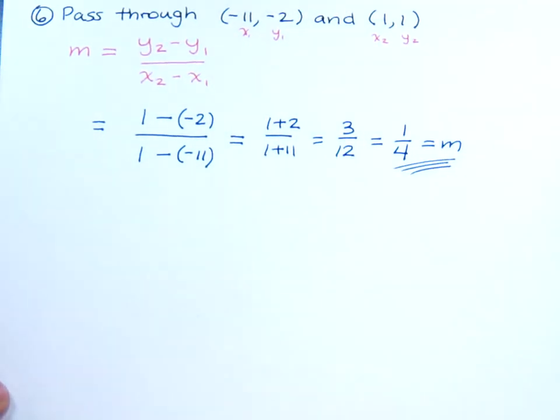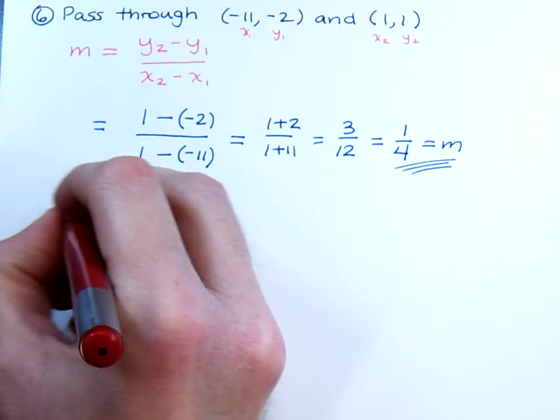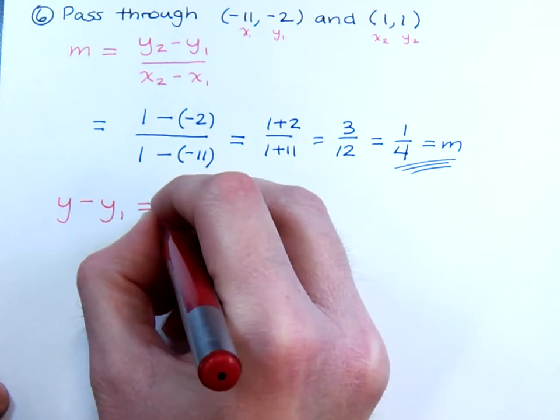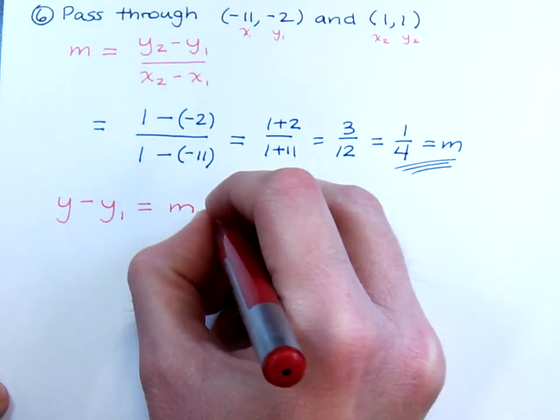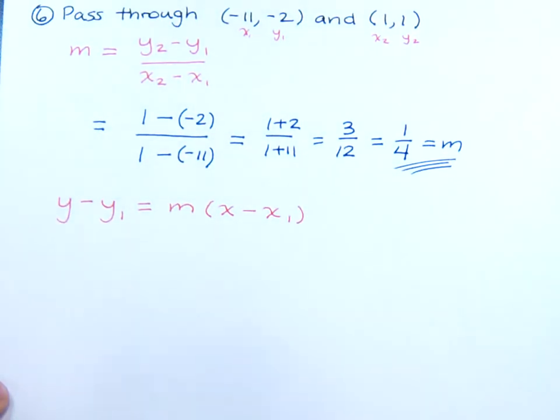Now, let's use the point-slope formula to get the equation for our line. So y minus y₁ equals m times x minus x₁.